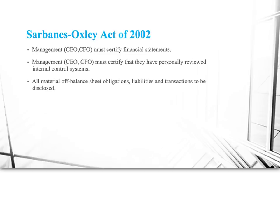Let's talk about the Sarbanes-Oxley Act of 2002. Sarbanes-Oxley was created in an environment where there had been a series of really big frauds — Enron being probably the most well-known, but also WorldCom, MCI, and others. Every one of the people indicted, some of whom went to prison, had essentially the same defense: 'I didn't know. I had no idea this was going on in my company. I was relying on people who worked for me and they let me down.' Sarbanes-Oxley took that defense off the table.